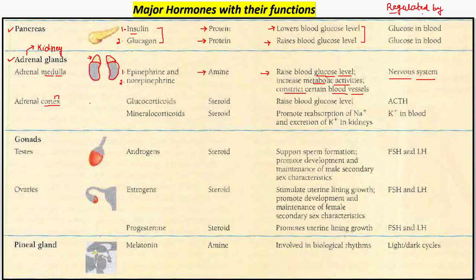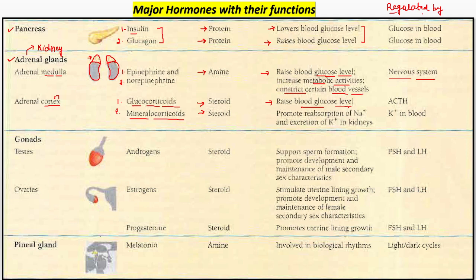Agar aap cortex exterior region se dekh rahe ho, to doh hormones aapke saamne aayenge — one is glucocorticoids and second is mineralocorticoids, jo ki dono ke dono steroid hain nature mein. Glucocorticoids — naam se bhi pata chal raha hai — iska basic function hai blood glucose ke level ko high karna. Regulation ki baat karoge, to regulation jo hai woh ACTH — adrenocorticotropic hormone — jo ki anterior pituitary se secret hota hai, uske dwara glucocorticoids ka level regulate hota hai.